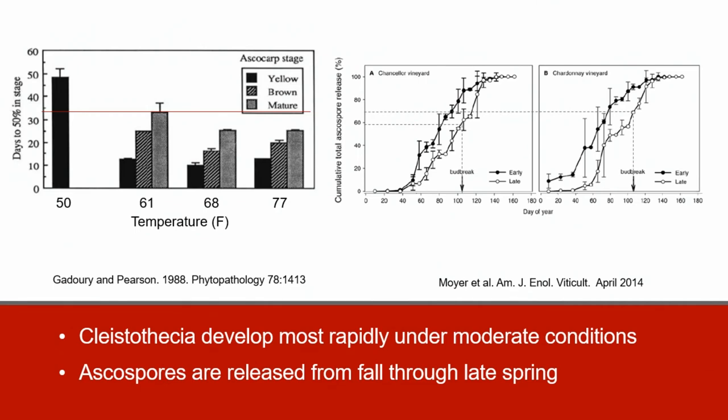If we look at 61 degrees Fahrenheit, you can see on the y-axis the days to 50 percent in the particular stage being measured. At 61 degrees Fahrenheit at around day 34 you have mature Kleistothesia and ascospore release. However, at 68 and 77 degrees you only need around 25 days to have 50 percent in the mature stage, so at those warmer temperatures you have more Kleistothesia that are mature and therefore more spore release.